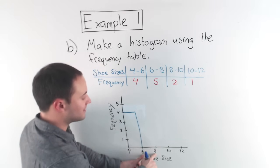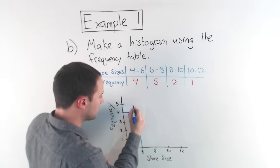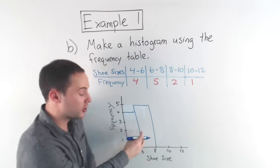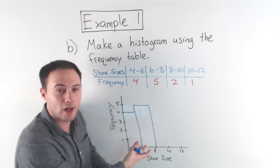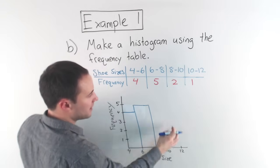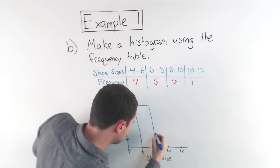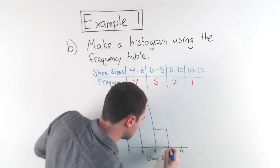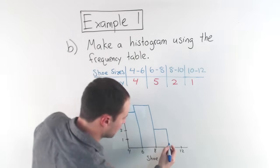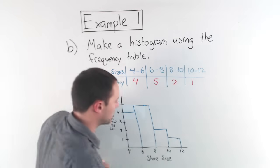Okay. So now here, six to eight, the frequency was five. So six to eight is up to five, just like that. Notice they're touching. That's what it should look like for a histogram. Eight to 10, frequency of eight to 10 had a frequency of two. So that is right about there. And finally, from 10 to 12, the frequency was only one. And that's going to be just like that.